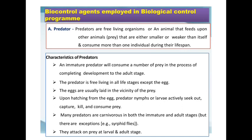Predator eggs are usually laid in the vicinity of the prey. Upon hatching, predator nymphs or larvae actively seek out, capture, kill, and consume the prey. Many predators are carnivorous in both immature and adult stages, but there are exceptions — in syrphid flies, only the larval stage is the feeding stage and adults are free-living. They attack prey at the larval and adult stage.